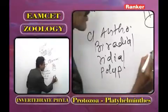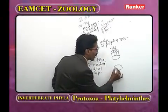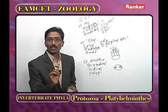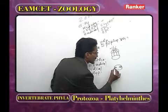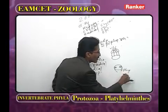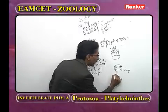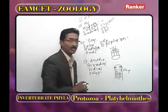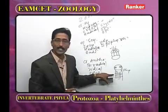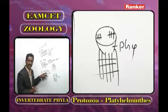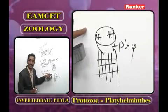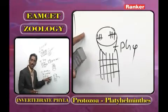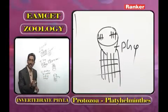In Anthozoa, on either side of the mouth, ciliated grooves called siphonoglyphs are present. Siphonoglyphs open into a small part called pharynx (also called stomodeum), which opens into the coelenteron. The coelenteron is divided into compartments by mesenteries derived from endodermis. Nematoblast cells are present in epidermis and endodermis; germ cells are derived from endoderm.